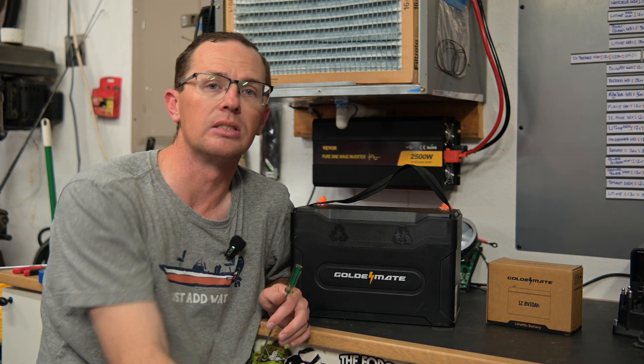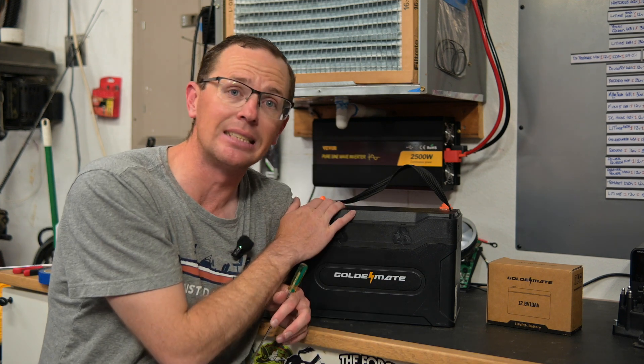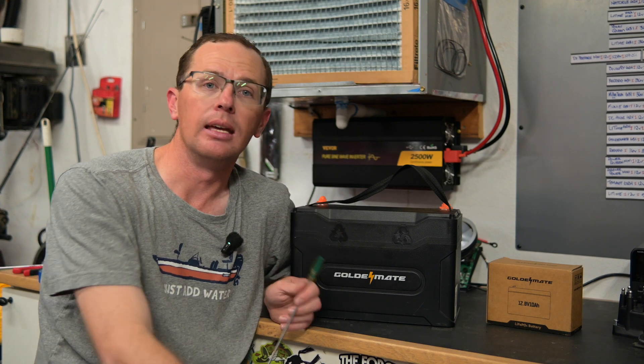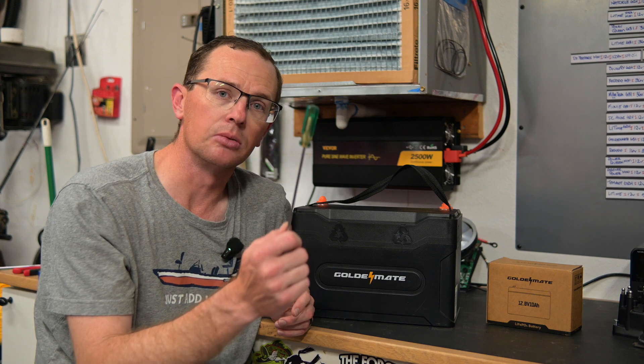This is an IP67 waterproof battery. So if that's something you want to use, you want to leave it out in the rain, you want to put in your boat, it is a waterproof battery which is nice. I'm holding a screwdriver because we're going to take it apart here soon and take a look into that, so stay tuned.